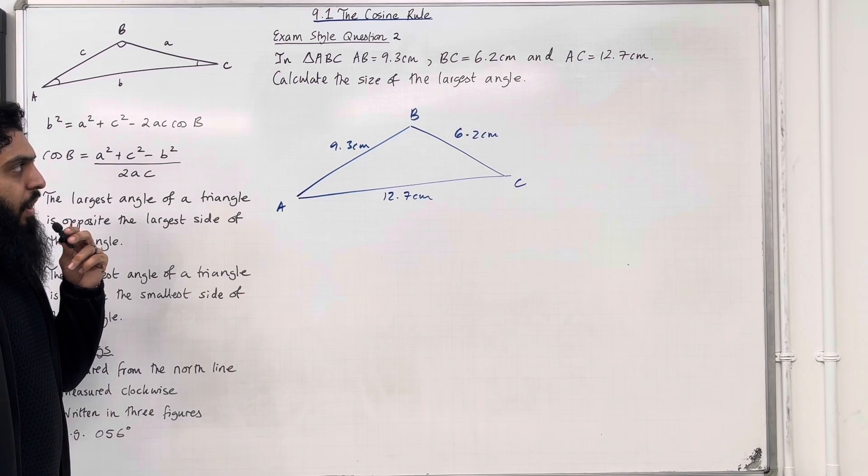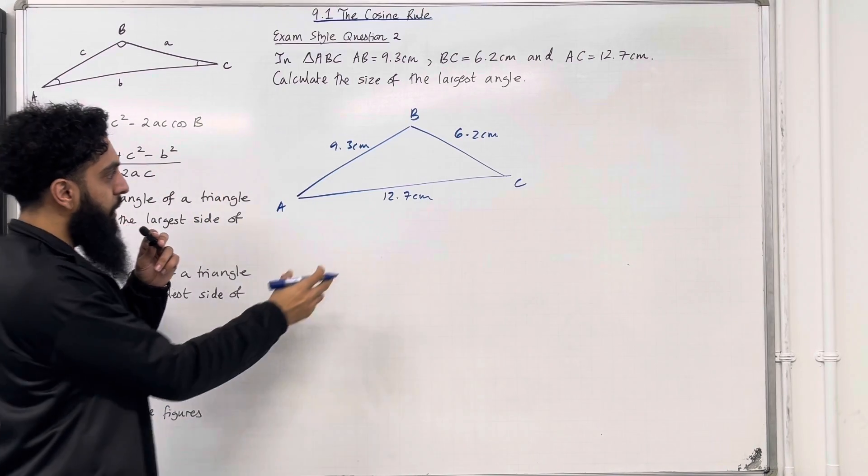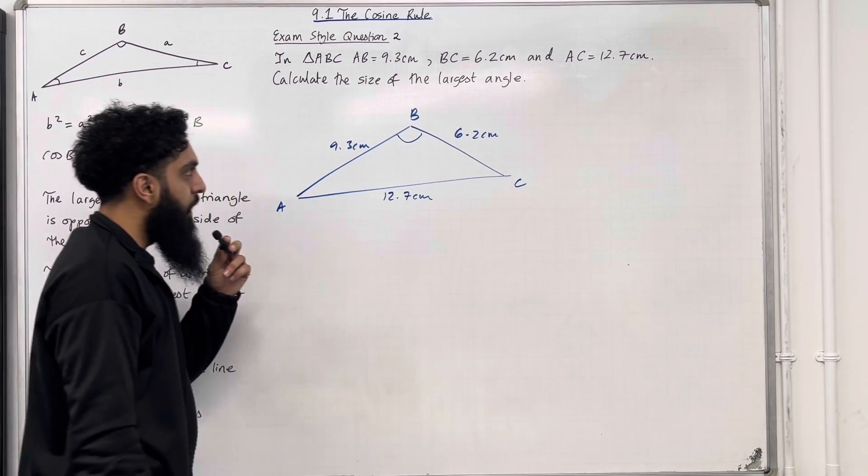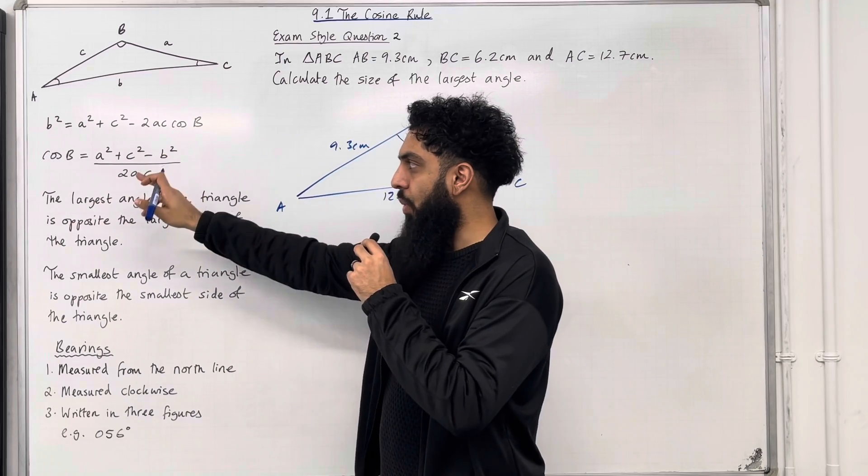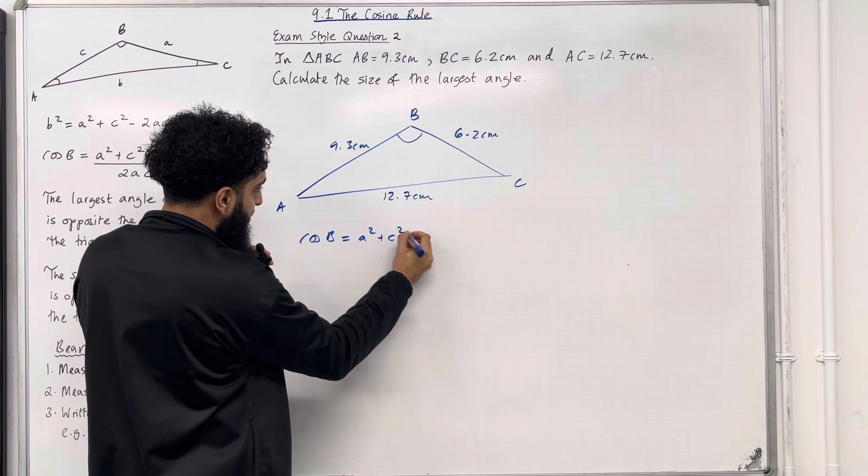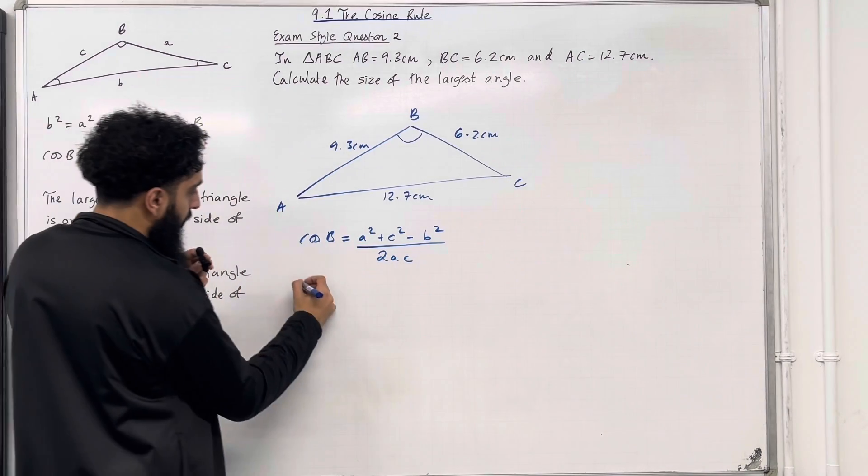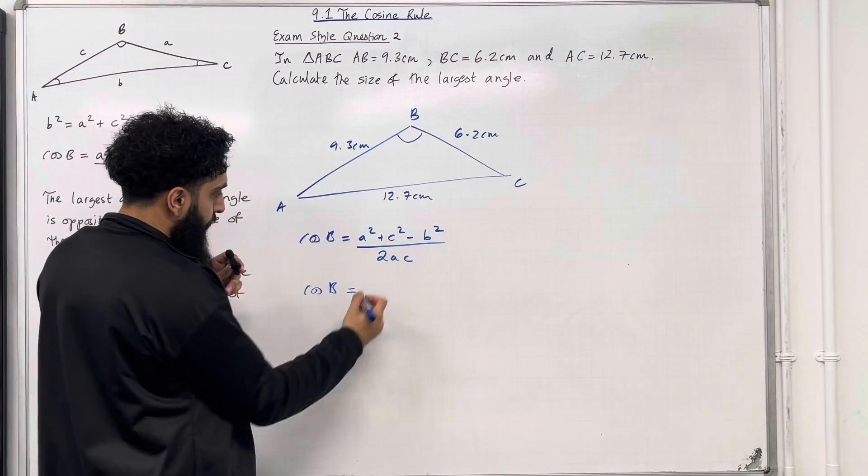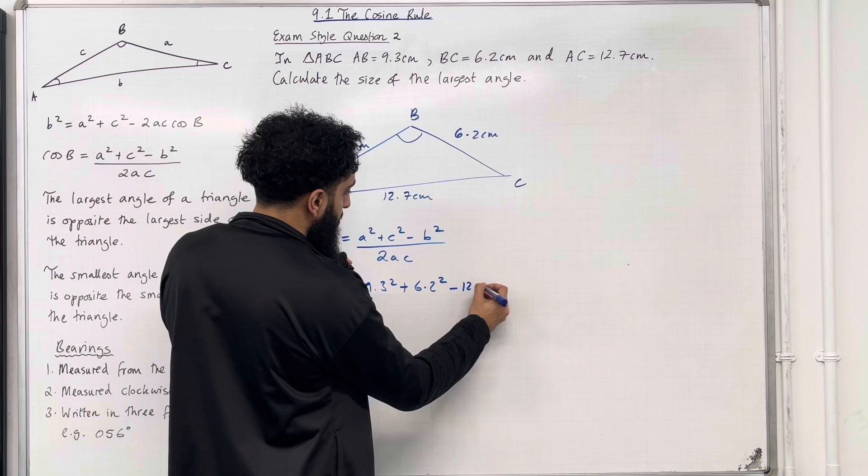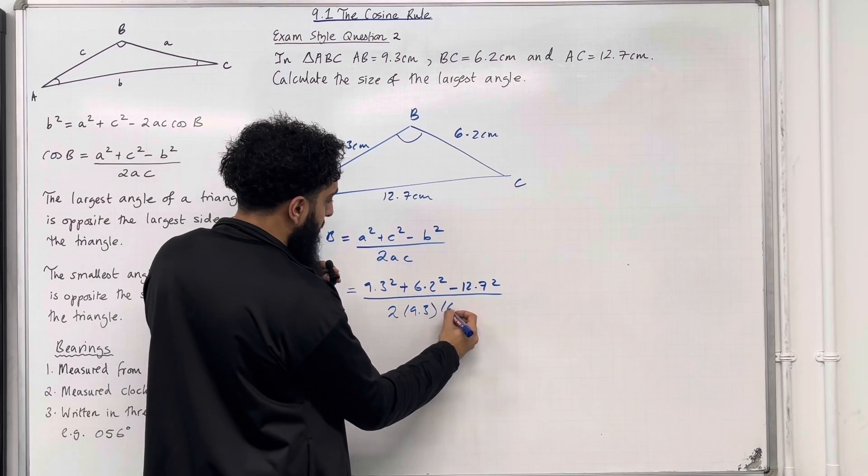We want to work out the size of the largest angle. We know that the largest angle is opposite the largest side. So the largest side of this triangle is 12.7 cm, so opposite this would be the largest angle. Now to work out this angle, we can use this particular form of the cosine rule. So we've got cos B equals a squared plus c squared minus b squared all over 2ac. So cos B will equal 9.3 squared plus 6.2 squared minus 12.7 squared all over 2 lots of 9.3 multiplied by 6.2.